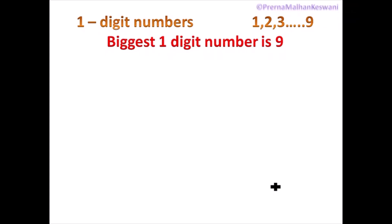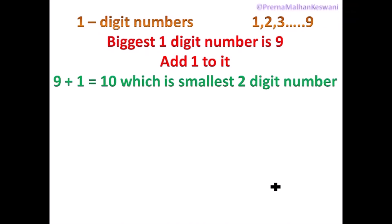But what will happen if you add 1 to the biggest one-digit number, that is 9? Think. Yes, you will get 10, which is a two-digit number — 1 and 0 — which is the smallest two-digit number.